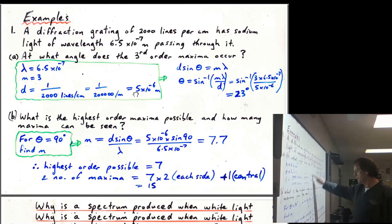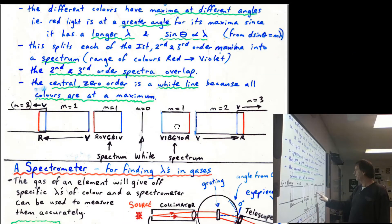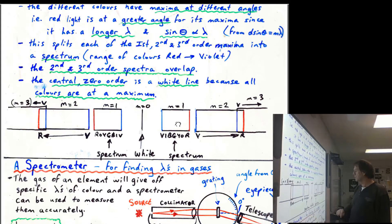So coming down, we've also done white light as well. We've talked about the fact that there are a range of colors and you get a first order spectrum here and a central white band.